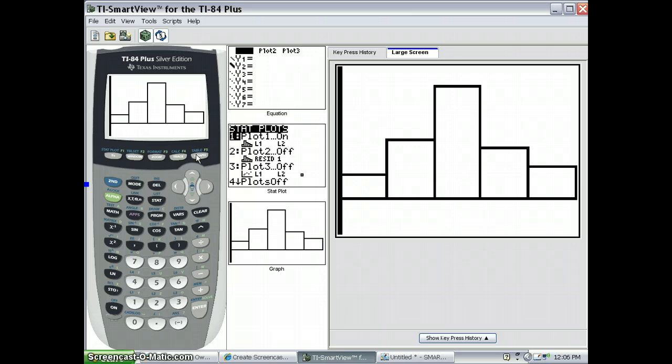So this gives us a perfect histogram for this data set. And if we trace through, we'll see that there are 18 values between 0 and 10. Notice that the rectangle is centered on 5 on the x-axis. There are 42 values between 10 and 20, and so on. And that's it.